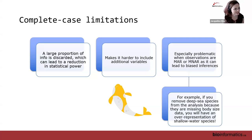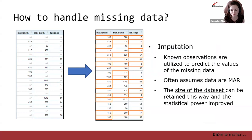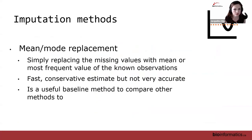Our alternative is imputation, where known observations are used to predict the values of the missing data. Imputation methods often assume data are missing at random, the size of the dataset can be retained, and statistical power can be improved. One example is mean or mode replacement, which simply replaces missing values with the mean or most frequent value of the known observations.